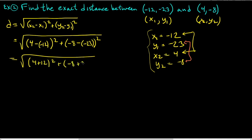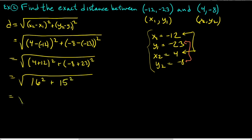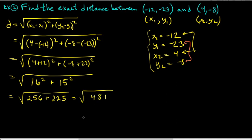4 plus 12 is 16, so we have 16 squared. And 23 minus 8 is 15, positive 15, so 15 squared. Don't make the mistake of doing 16 plus 15. 16 squared is 256, and 15 times 15 is 225. When you add those, you get 481. Square root of 481 — using your calculator, that's approximately 21.93.